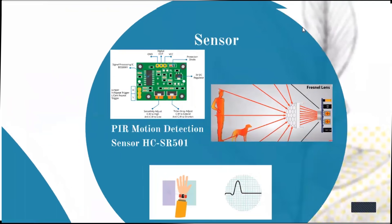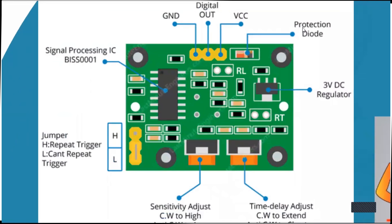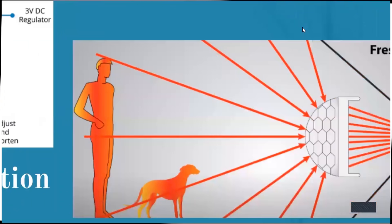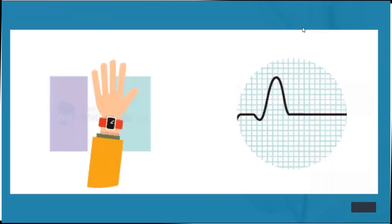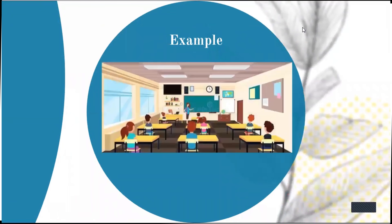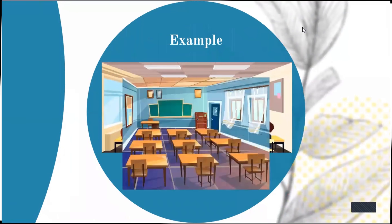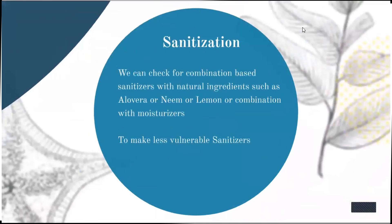Here we are using a PIR motion detection sensor, where when a human comes under the range of the signal, they emit heat in the form of infrared radiation up to seven meters and they get detected. Once detected, the signal trigger fires for the dispensing of sanitizer. For example, in a classroom, human detection is required for dispensing; otherwise it is not required when the classroom is empty.